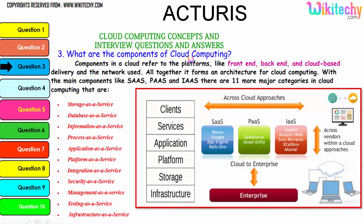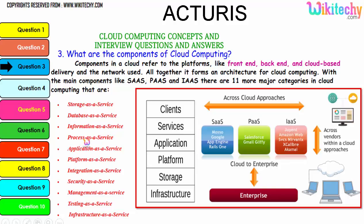Now let's talk about the components of cloud computing. Components in a cloud refer to platforms like front-end, back-end, cloud-based delivery, and the network used — all together they form an architecture for cloud computing. The main components are Software as a Service, Platform as a Service, and Infrastructure as a Service. There are 11 major categories in cloud: storage as a service, database as a service, information as a service, process as a service, application platform, integration, security, management, testing, and finally infrastructure.